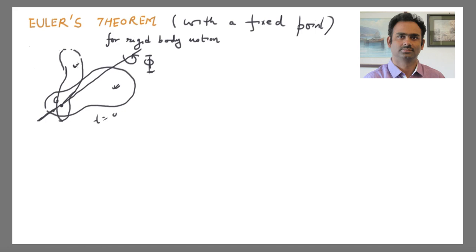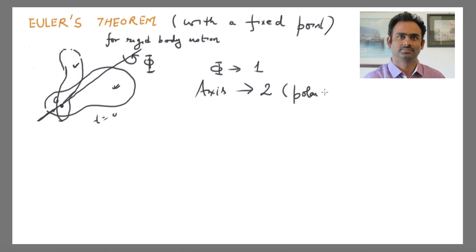This is consistent because phi, the angle phi, is one number — so you use up one degree of freedom. Then your axis: specifying an axis requires knowing two numbers. If I tell you there is a line going from this point O, you will ask me for the polar and azimuthal angles of this line. So clearly 2 plus 1 equals 3.